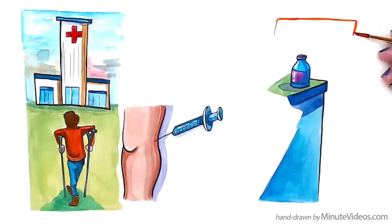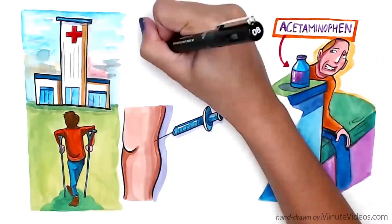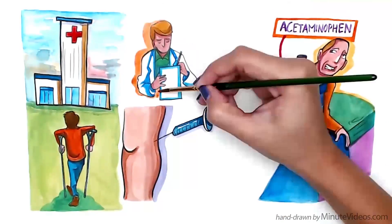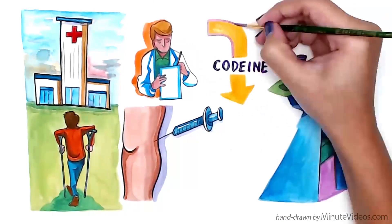Over-the-counter pain relievers like acetaminophen or paracetamol can be used, and when they aren't enough, a doctor can prescribe a mild opiate like codeine to help with the pain.